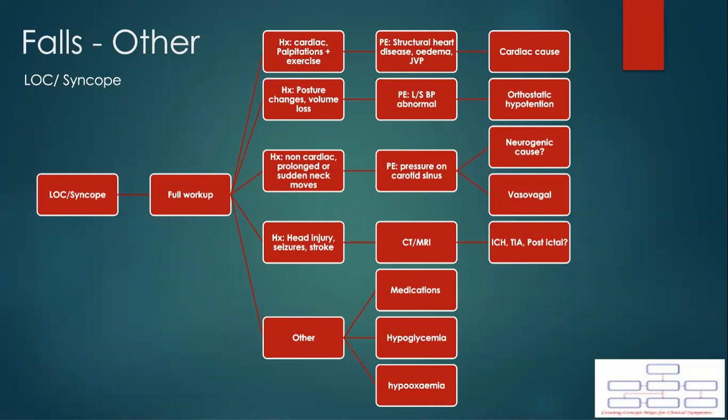If you are suspecting a traumatic cause, stroke, or other neurologically related causes, it is worth investigating further with a CT and MRI head. Other causes could be due to medications, oxygen, and sugar levels. Make sure to do an ABCDE assessment, including blood glucose measurements.